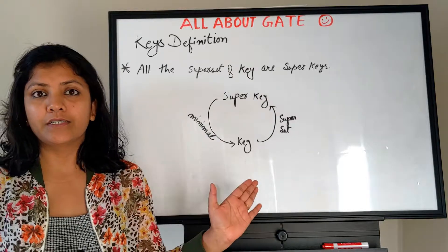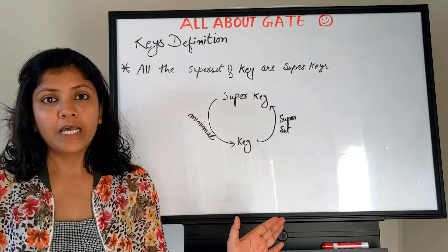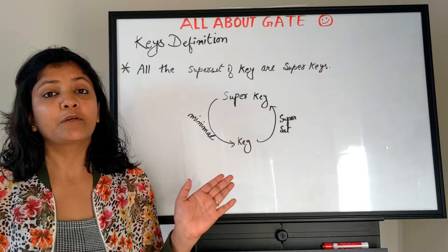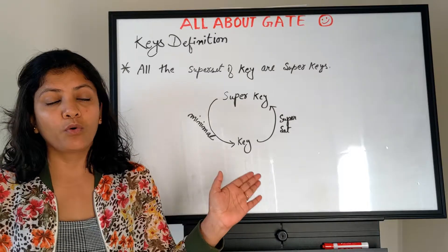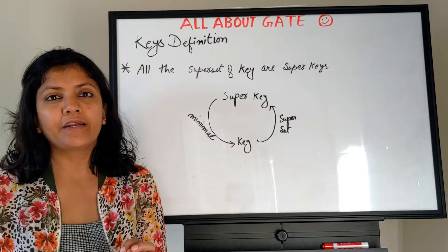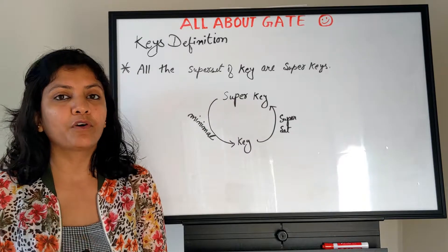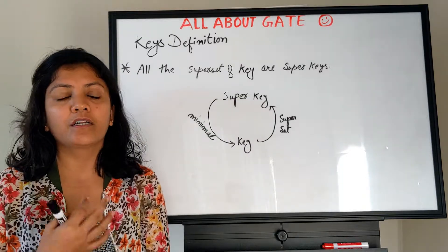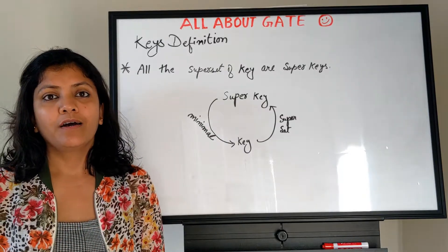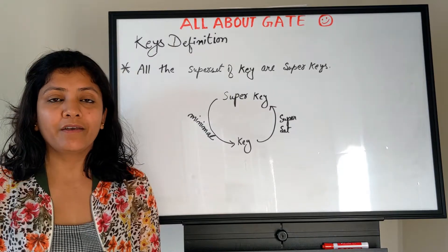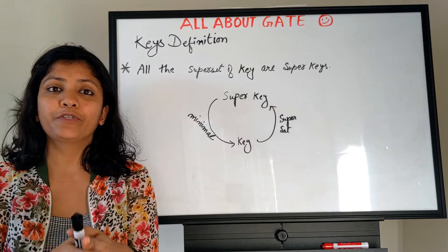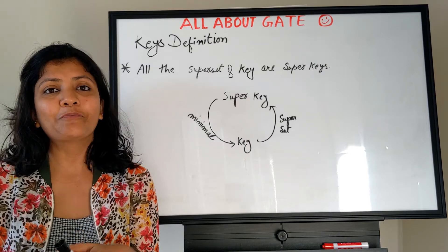The primary key, selected by the database designer, will have non-null values — this constraint is imposed on the primary key. Alternate keys, being candidate keys, have the uniqueness property but need not be non-null. This concludes the video on keys and their definitions. The next video will cover practice problems and previous year GATE questions on finding the number of candidate keys and super keys.